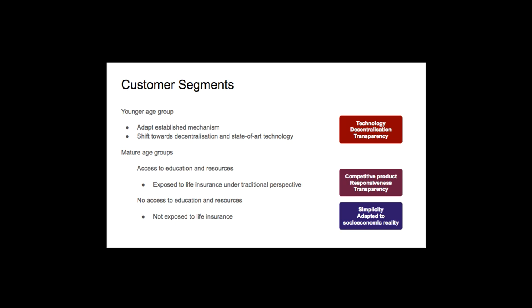In the case of mature age groups, we recognize two general behaviors. Individuals who look for life insurance policies can be found among people with respectable access to education and financial resources. This perspective is in general classic or traditional. They represent our second customer segment to which we intend to reach by offering a competitive life insurance product based on transparency and responsiveness.